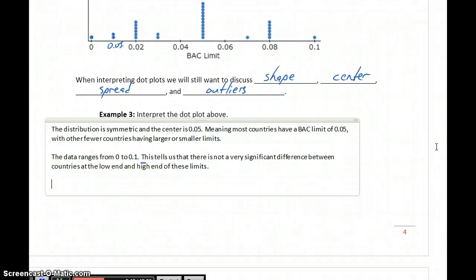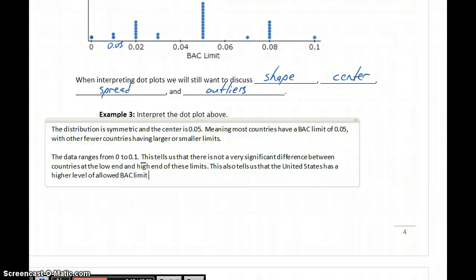Values are ranging from 0 to 0.1. Obviously, there's a difference between having a BAC limit of 0 and 0.1. At 0.1, some sites say that you're starting to get more impaired judgment, but it doesn't seem like it's getting to any incredibly extreme levels yet. And one thing we could add to this is that this tells us that the United States has a higher level of allowed BAC limit than most other countries in this study. That doesn't necessarily mean that our limit is too high, but when we start to look at other countries, we're on the high end of that scale.